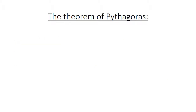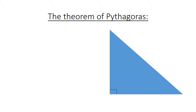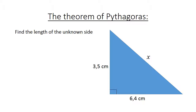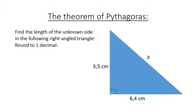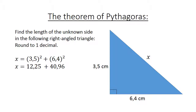The theorem of Pythagoras again. We have a right angle triangle with sides 6.4 centimeters and 3.5 centimeters, and X. Find the length of the unknown side in the following right angle triangle. Round to one decimal. X equals 3.5 squared plus 6.4 squared equals 12.25 plus 40.96. X equals 53.21.